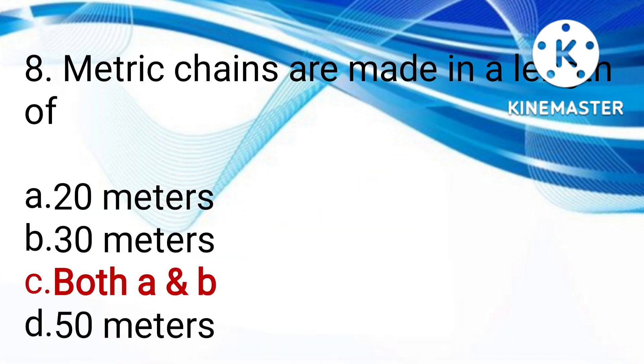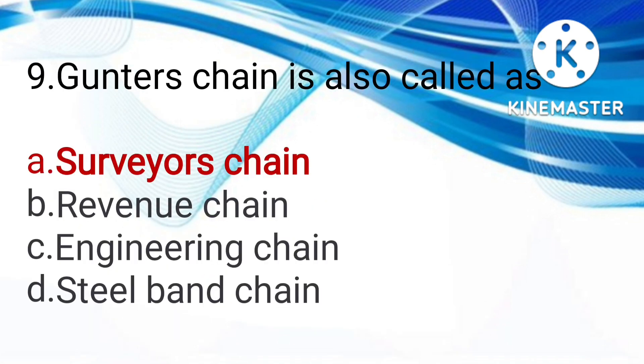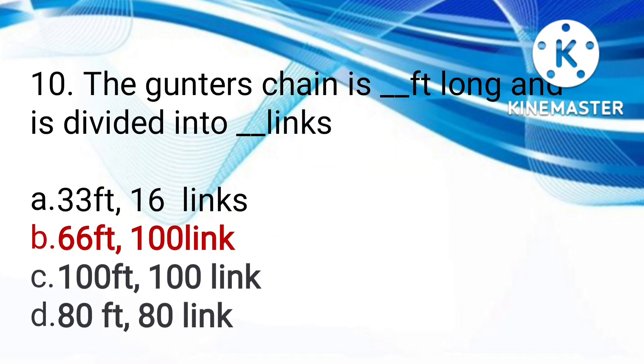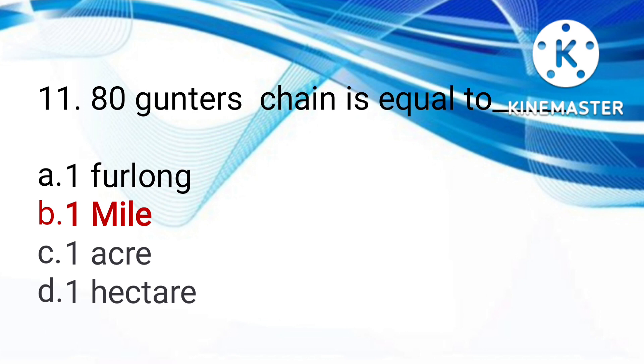Metric chains are made in lengths of 20 meters, 30 meters, both A and B, or 50 meters. Answer is both A and B. Gunter chain is also called surveyor chain, revenue chain, engineering chain, or steel band chain. The answer is surveyor chain. The gunter chain is 66 feet long and divided into 100 links. 80 gunter chains equals one mile.